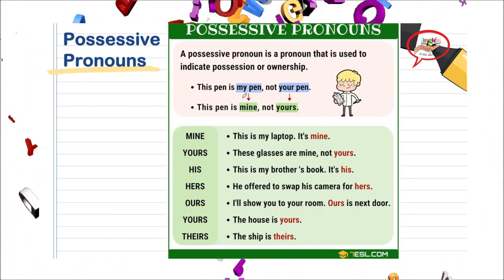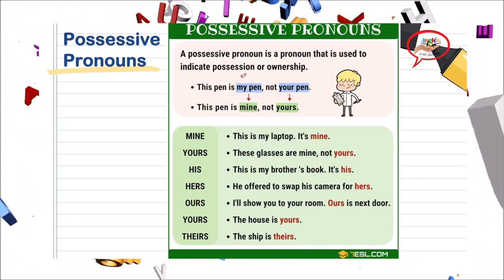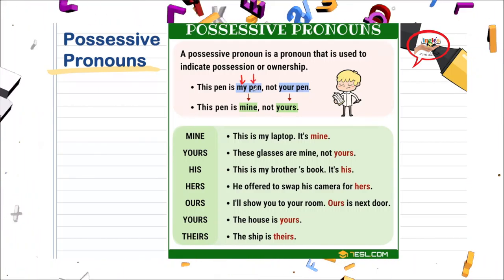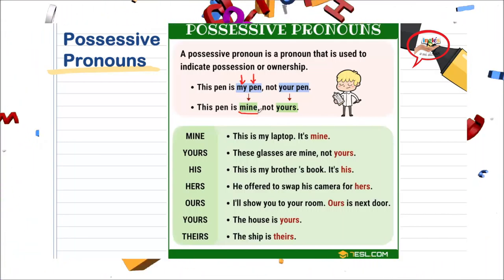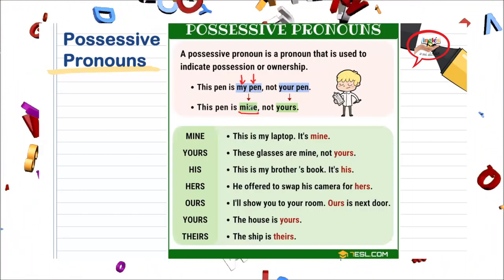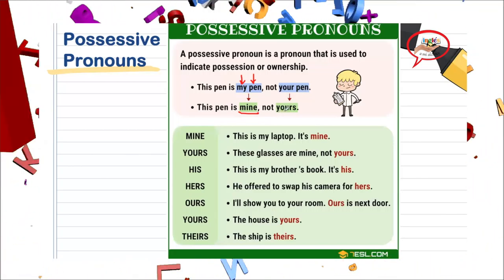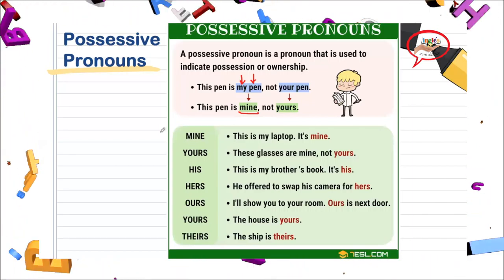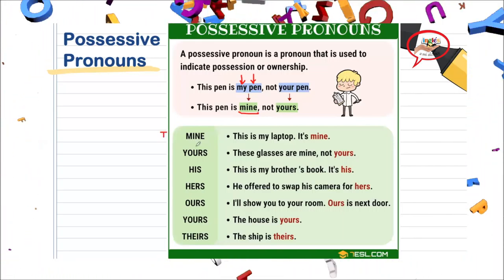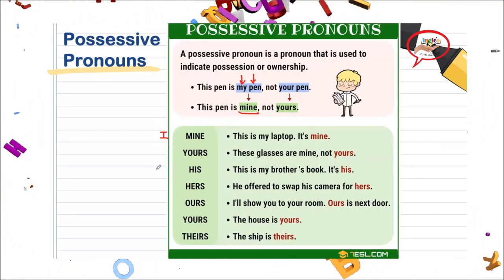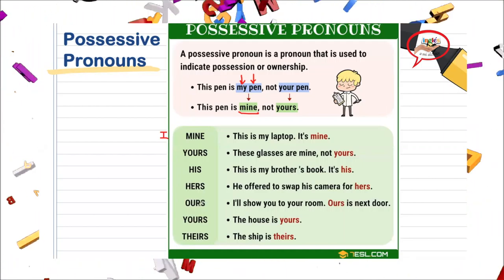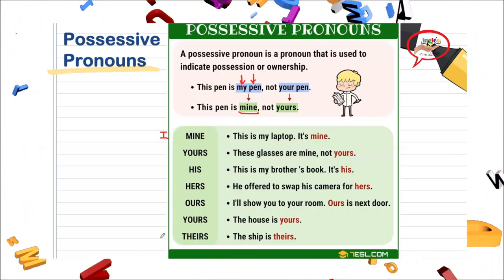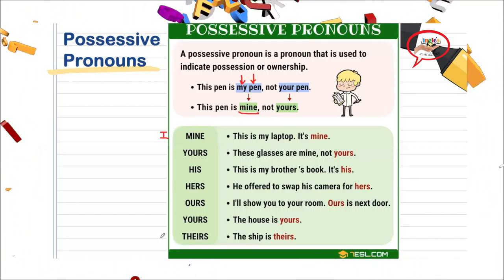Para crear un possessive pronoun ocupamos un subject pronoun y un possessive adjective. Por ejemplo, yo digo my pen — lo voy a sustituir por mine. Your pen lo voy a sustituir por yours. Para mine lo vamos a utilizar con I. Para yours, you. Para his, he. Para hers, she. Para ours, we. Para yours, you. Y para theirs, they.